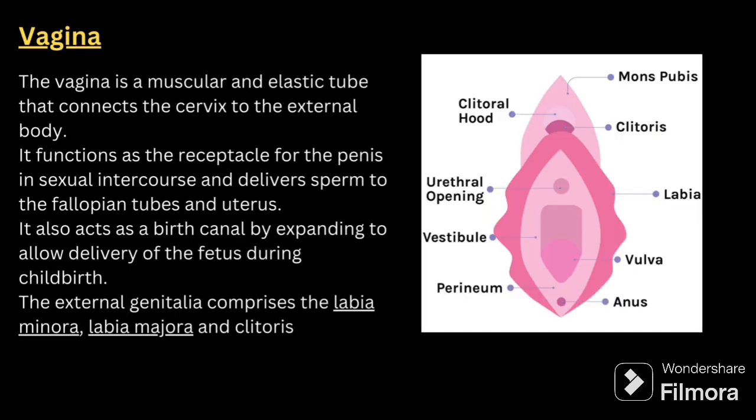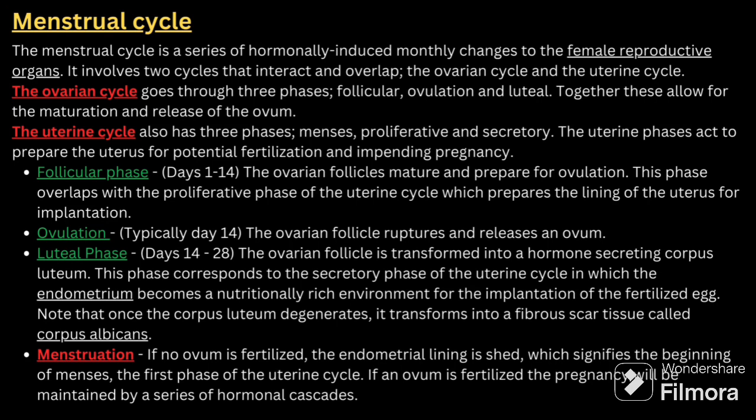Next comes the vagina. The vagina is a muscular and elastic tube that connects the cervix to the external body. It functions as a receptacle for the penis during sexual intercourse and delivers sperm to the fallopian tube and uterus. It also acts as a birth canal by expanding to allow delivery of the fetus during childbirth. The external genitalia comprises the labia minora, labia majora, and clitoris.